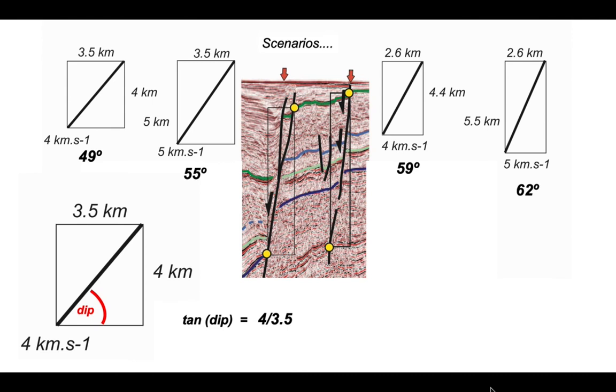If we use our seismic velocity of 4 kilometres per second, we have an apparent dip of 59 degrees. If we increase our assumed seismic velocity to 5 kilometres per second, the fault dips at 62 degrees.